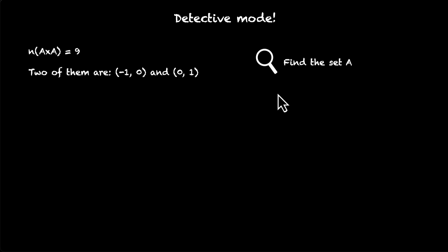Okay, so let's solve this together. Same approach. The Cartesian product contains ordered pairs. Let's look at these two: (-1, 0) and (0, 1). The first elements should come from the first set, and the second elements should come from the second set. But here we have both the sets as A. This Cartesian product has both the sets as A.